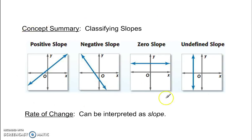Here's a quick summary. A positive slope, reading from left to right, this goes up. Going from left to right, a negative slope goes down.